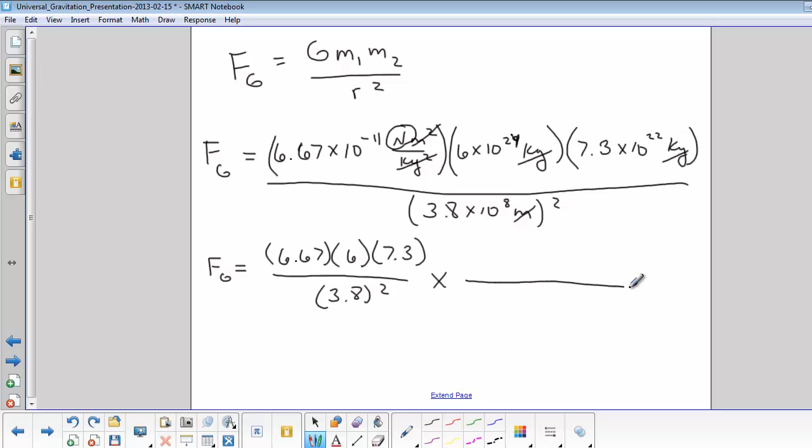And then our exponents we have 10 to the negative 11th, 10 to the 24th, 10 to the 22nd, and then in the denominator we have 10 to the 8th and that's squared. So 10 to the 8th squared. We can cross that out. That would be 10 to the 16th.